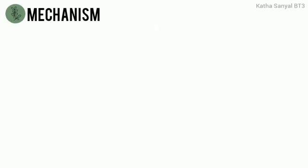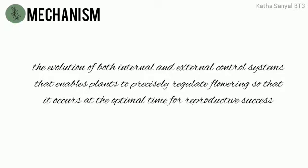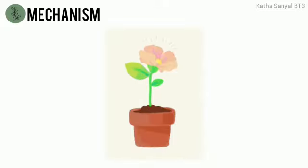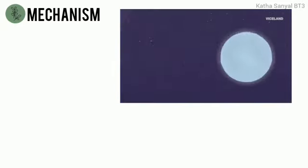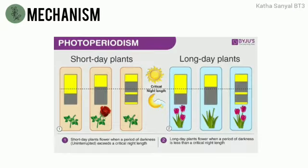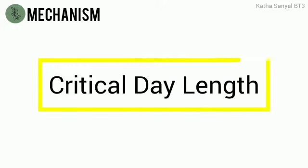It is understood that the evolution of both internal and external control systems enables plants to precisely regulate flowering so that it occurs at the optimal time for reproductive success. The way the plant determines this optimal time is through day-night periods, through the use of photoperiodism. Flowering plants are categorized as short-day plants and long-day plants according to their 24-hour cycle, known as the critical day length.